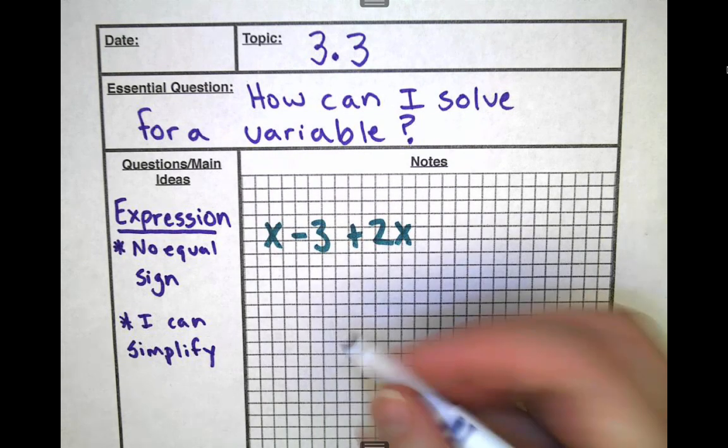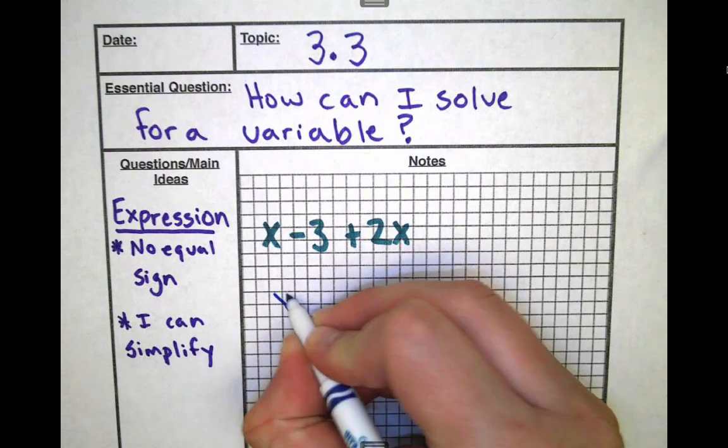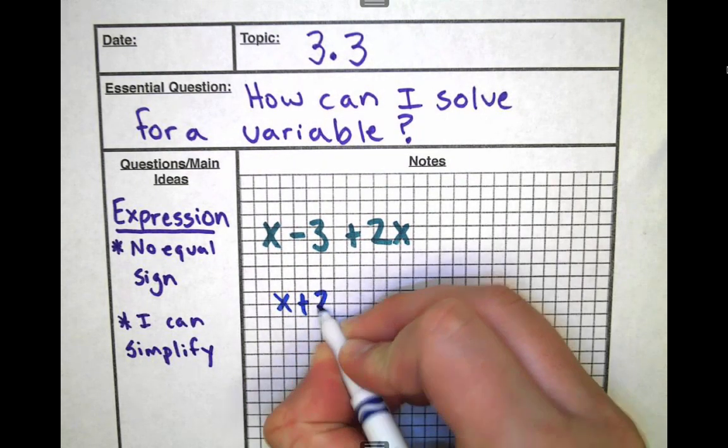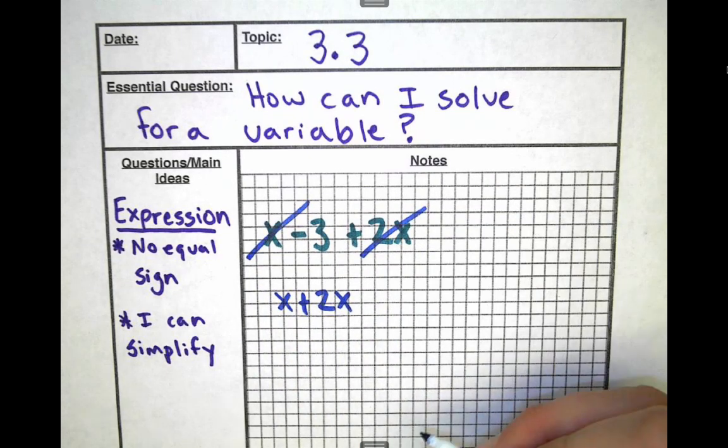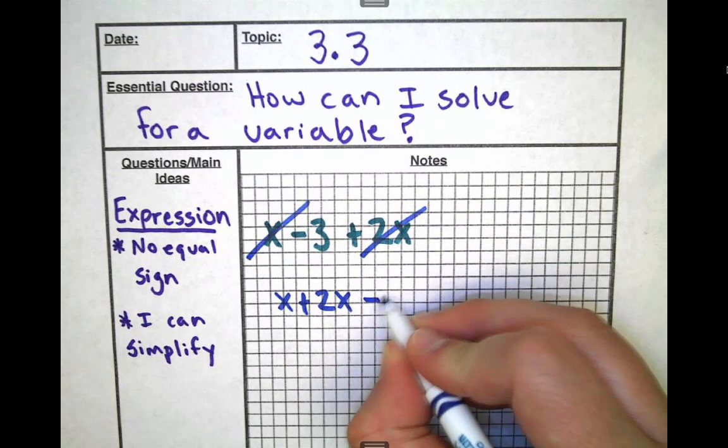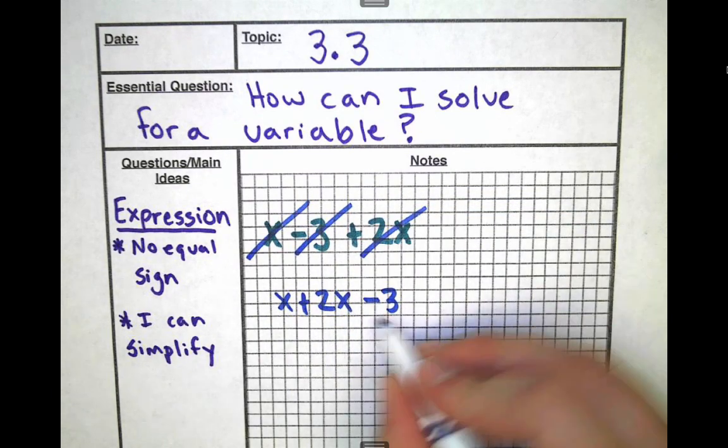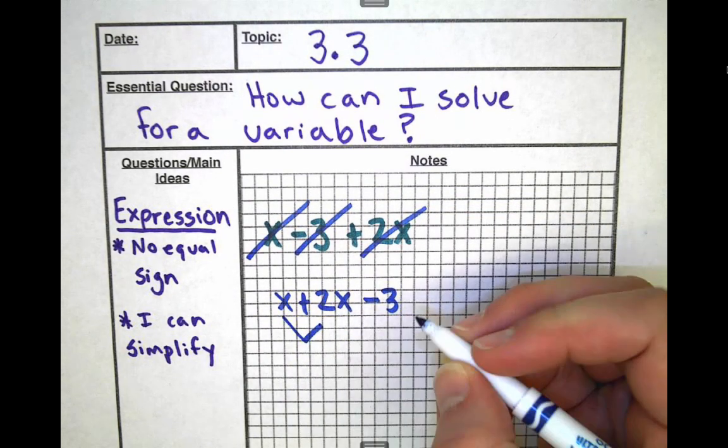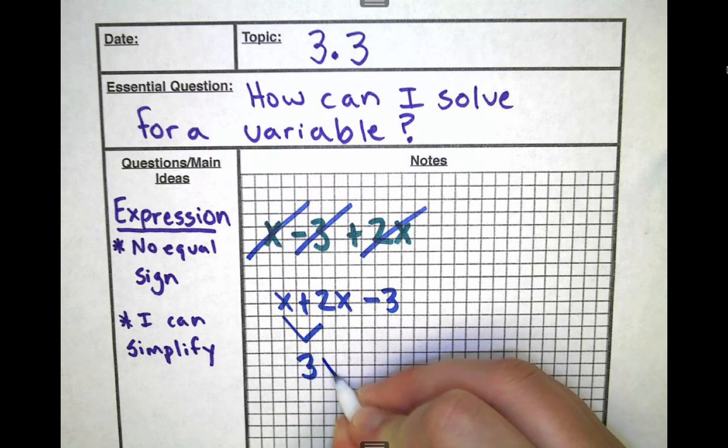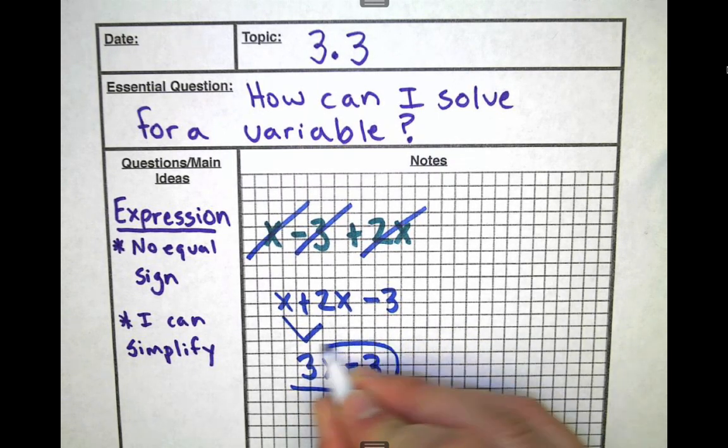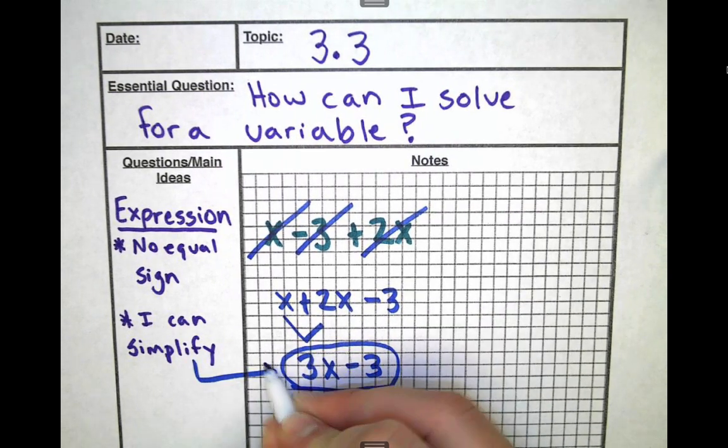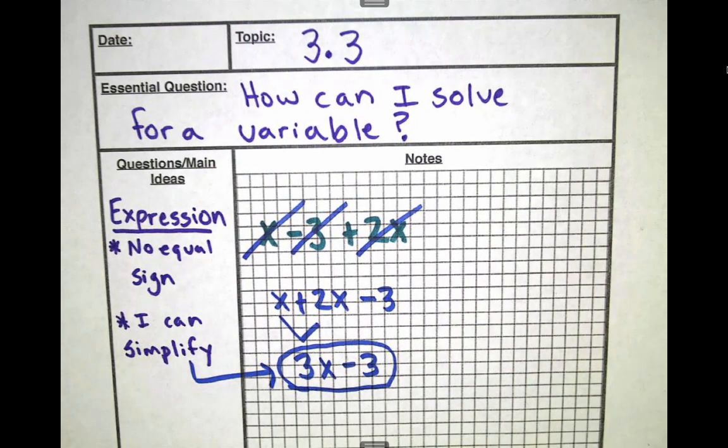We like to put the like terms together, so this x and this plus 2x combine nicely. I'll cross them out so I remember I used them. This minus 3 goes on the end. I can combine x plus 2x and say that's 3x minus 3. That's my simplified answer. When I said I can simplify, that's simplifying, but it's not solving. It's very different. An expression is something that cannot be solved.